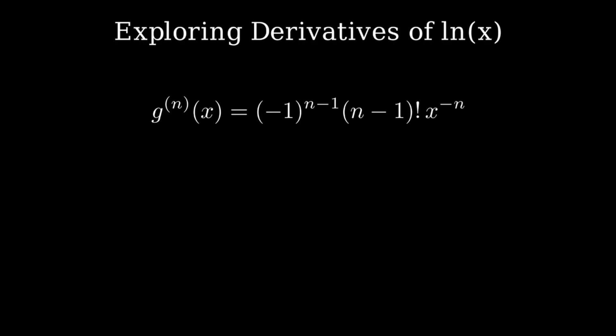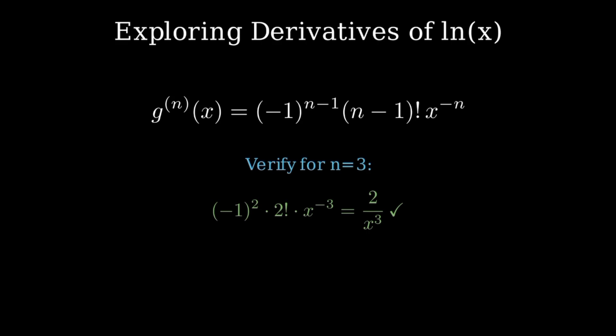Let me verify this works for n = 3. (-1)² is 1, times 2 factorial which is 2, times x^(-3) gives us 2/x³. Perfect — this matches our third derivative exactly. So we've discovered this beautiful pattern hidden inside the derivatives of the natural logarithm.